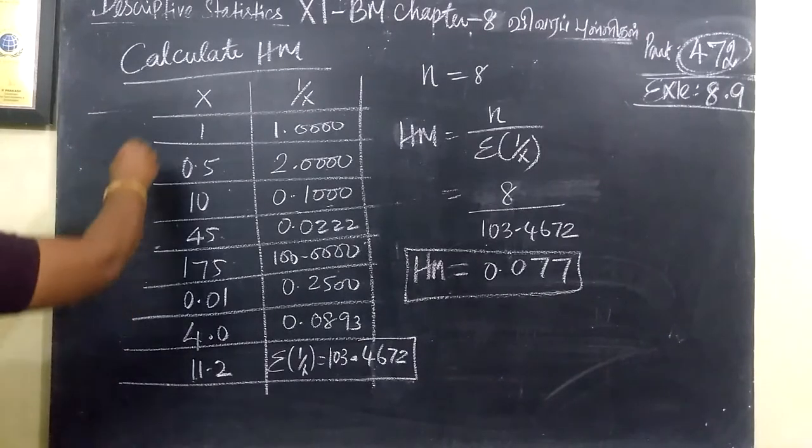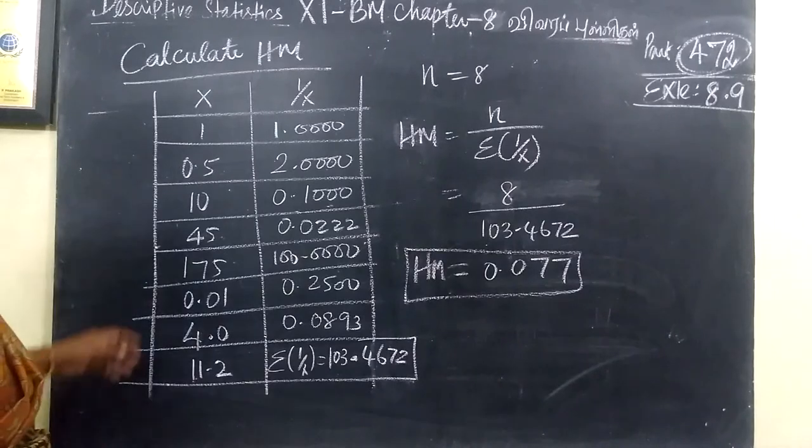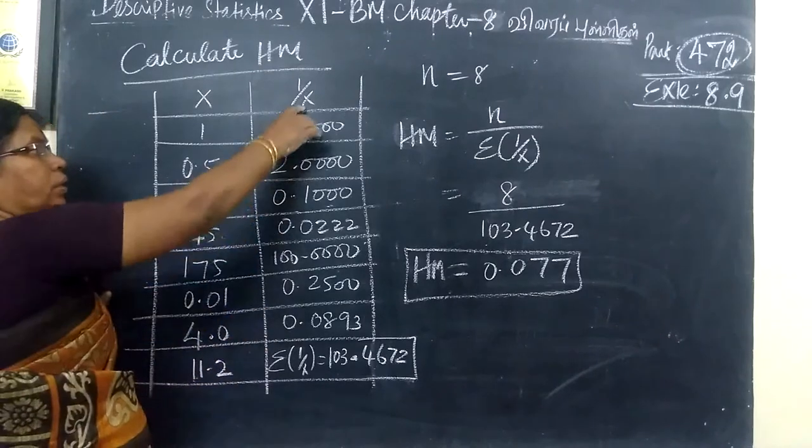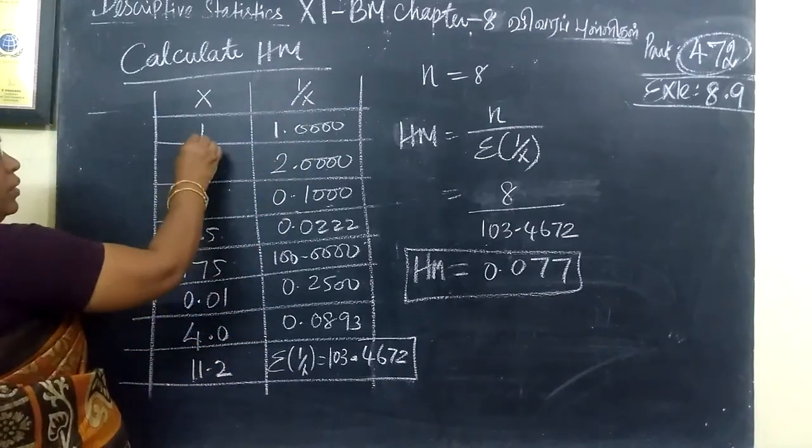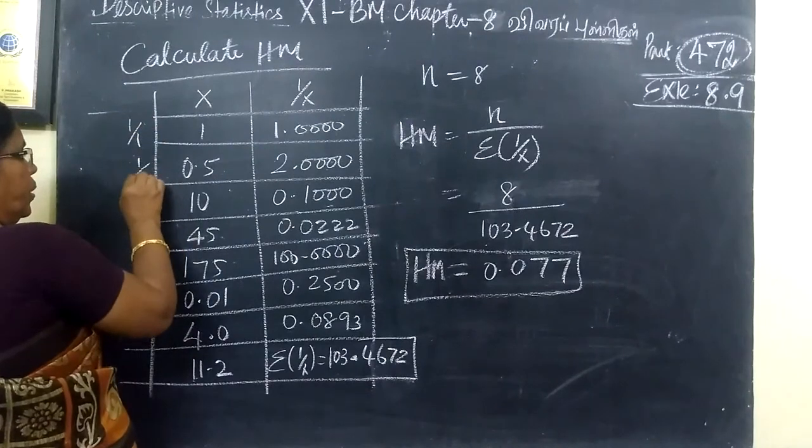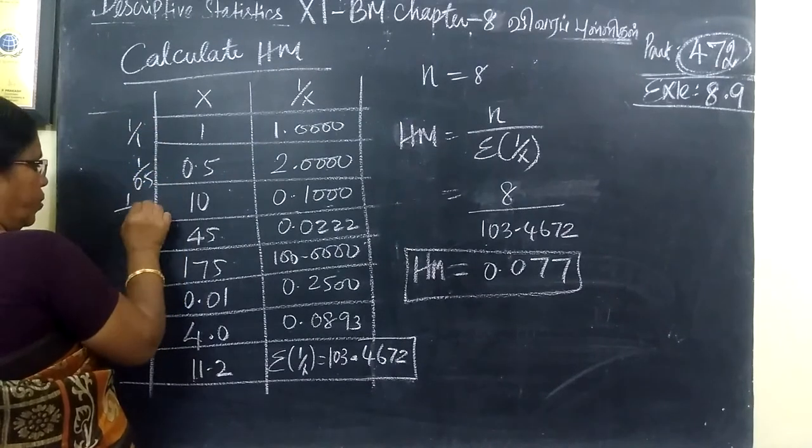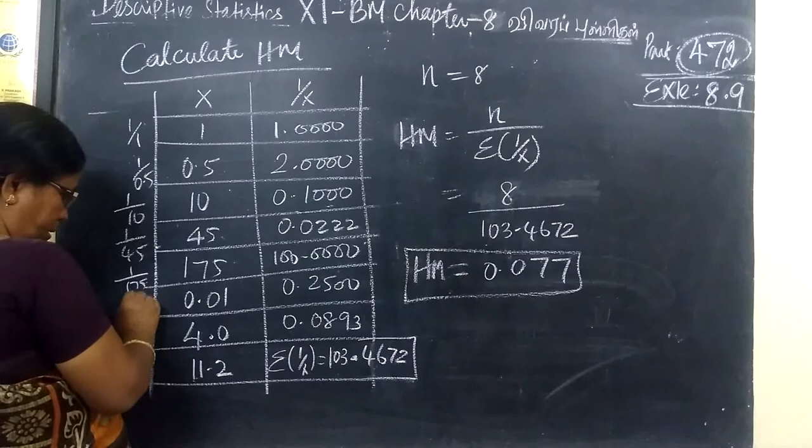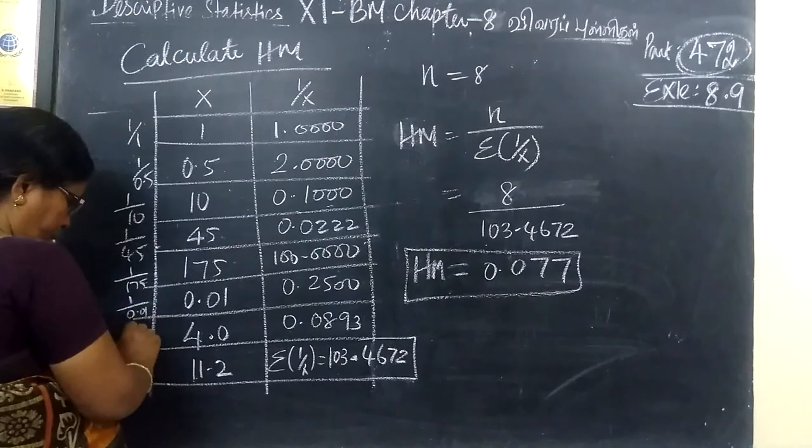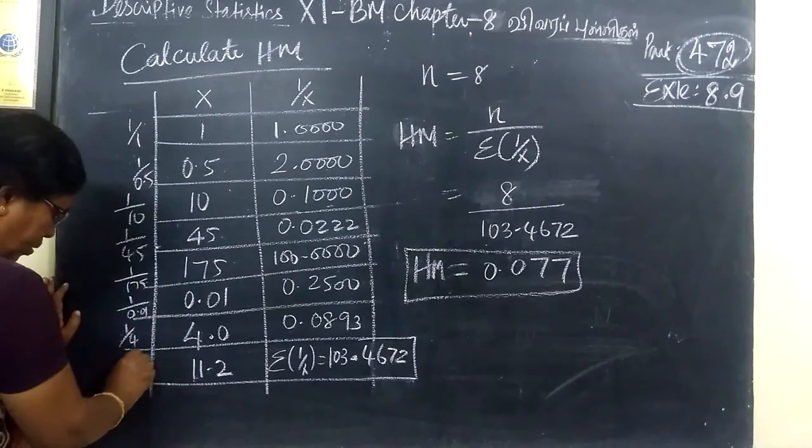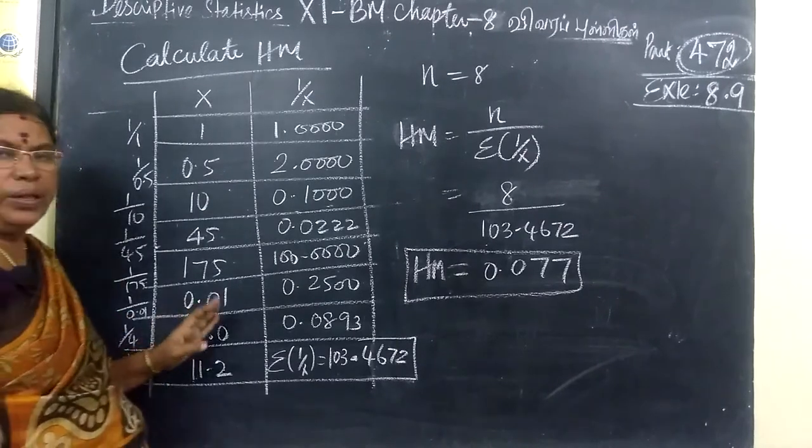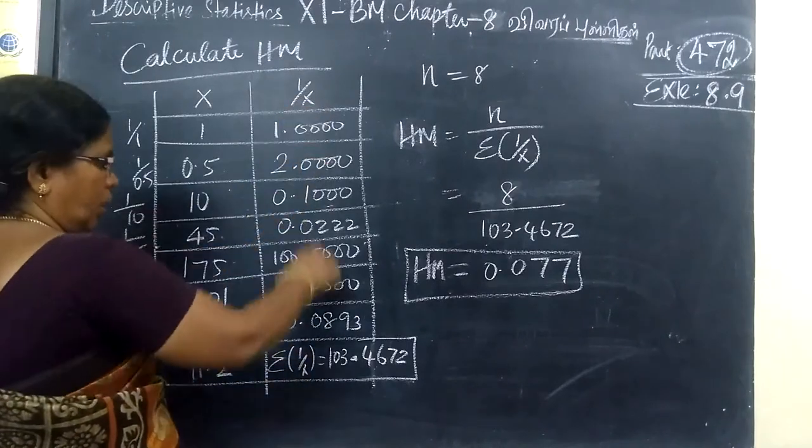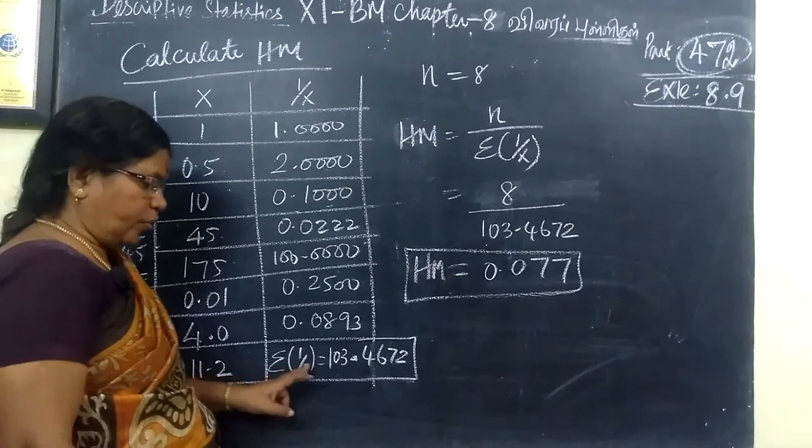This is f by x. Then 1 by x. This is f. Just using the calculator, find all this. We add it. Sigma of 1 by x is 103.4672.